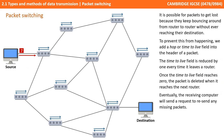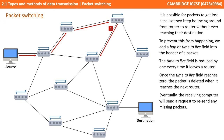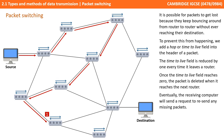It is possible for packets to get lost as they keep bouncing around from router to router without ever reaching their destination. To prevent this, we add a hop or time-to-live field into the header of a packet. The time-to-live field is reduced by one every time it leaves a router. Once the time-to-live field reaches zero, the packet is deleted when it reaches the next router. Eventually the receiving computer will send a request to resend any missing packets.